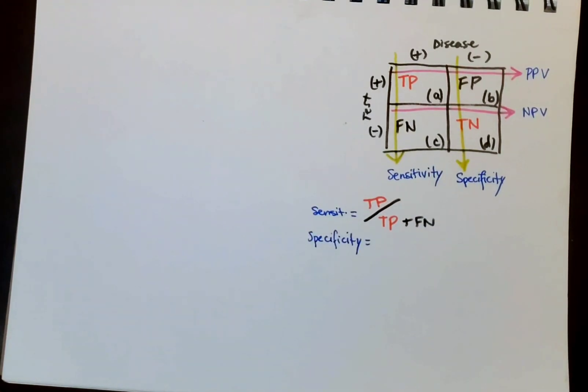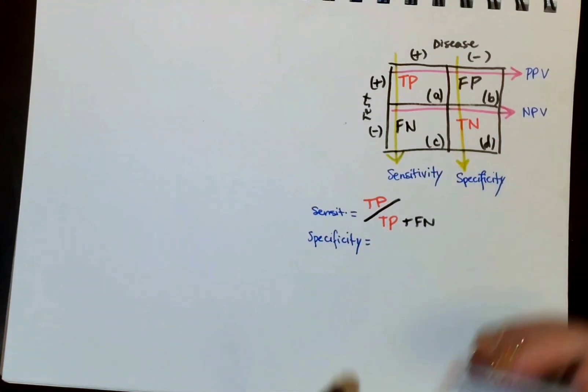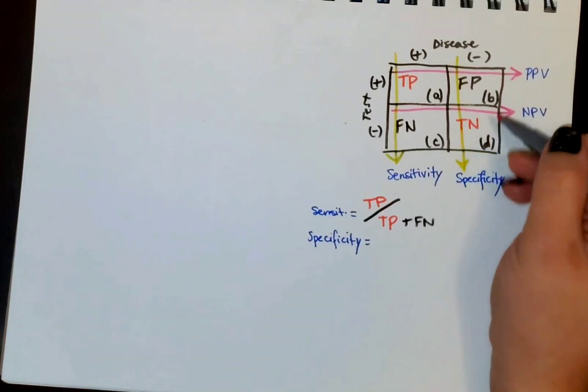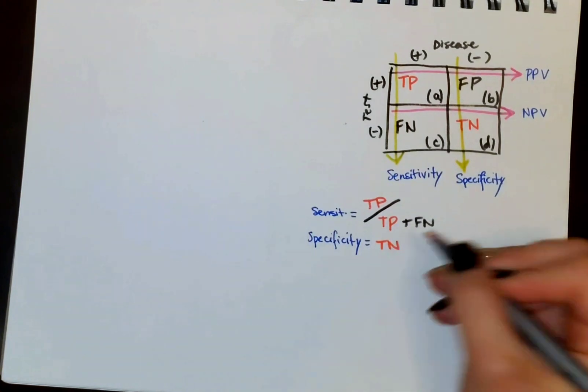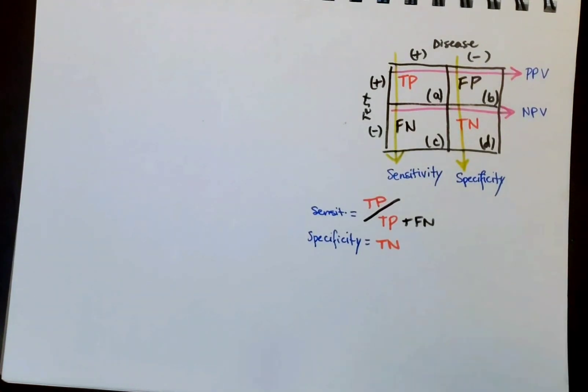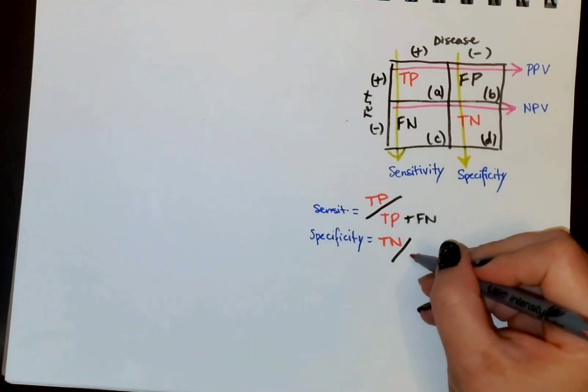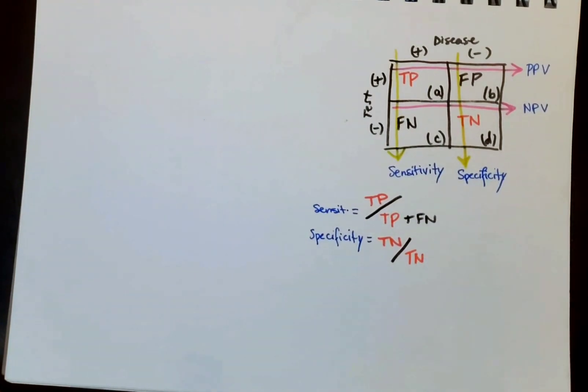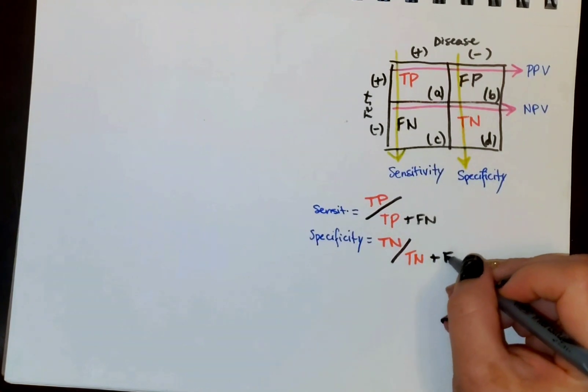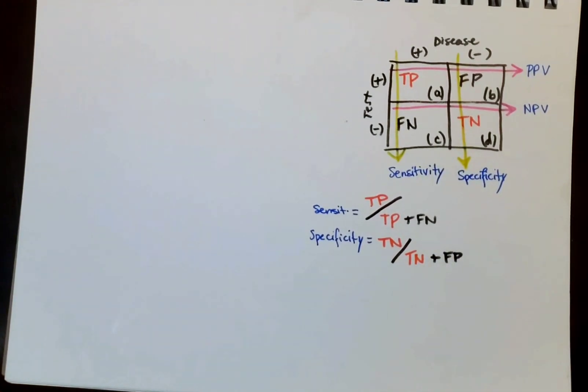Specificity is going to be the probability that a person who doesn't have a disease does in fact get a negative test result. So again, we're going to be taking the true negative, the true value, and we're going to be dividing that by the true negative plus false positive, using the columns as I stated.